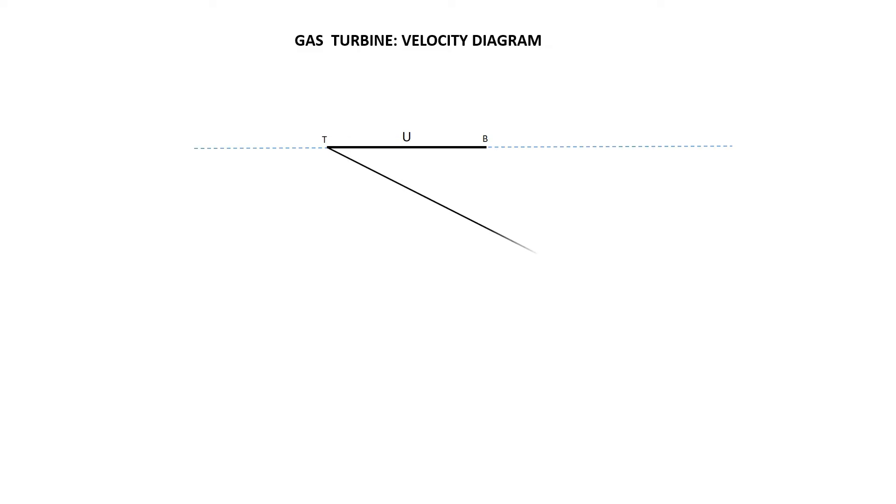Draw an absolute inlet velocity or nozzle velocity V1 at an angle alpha from the turbine point T.